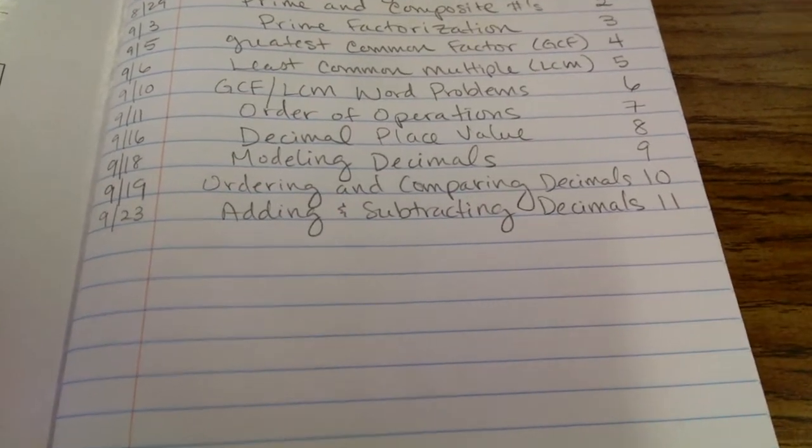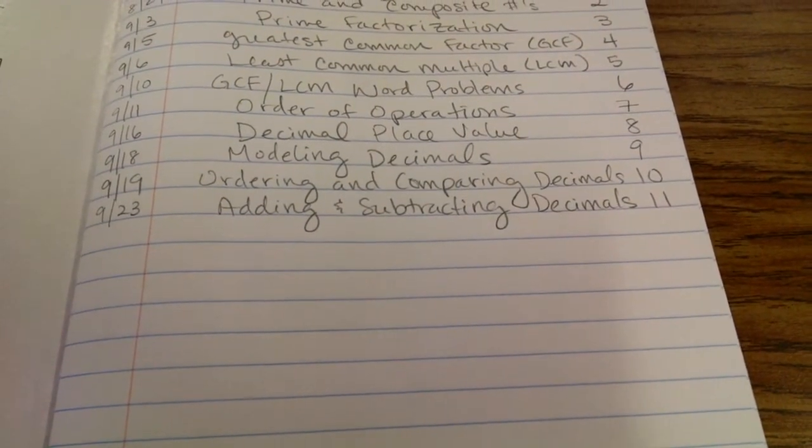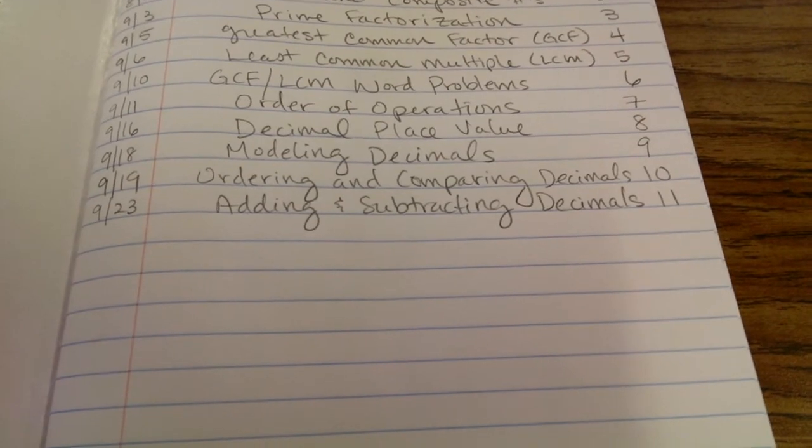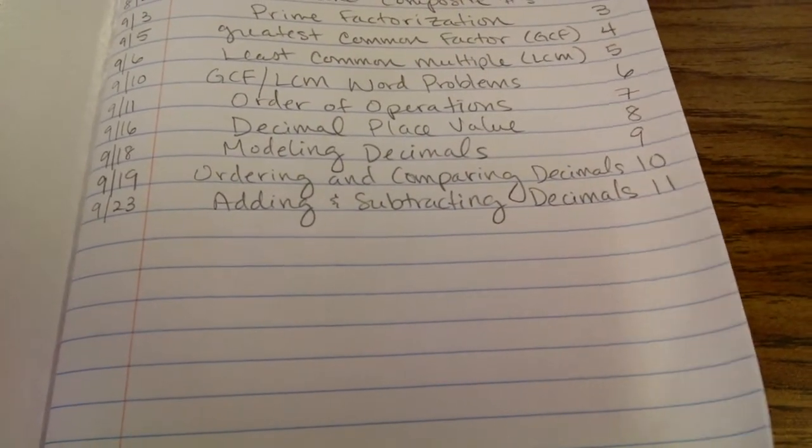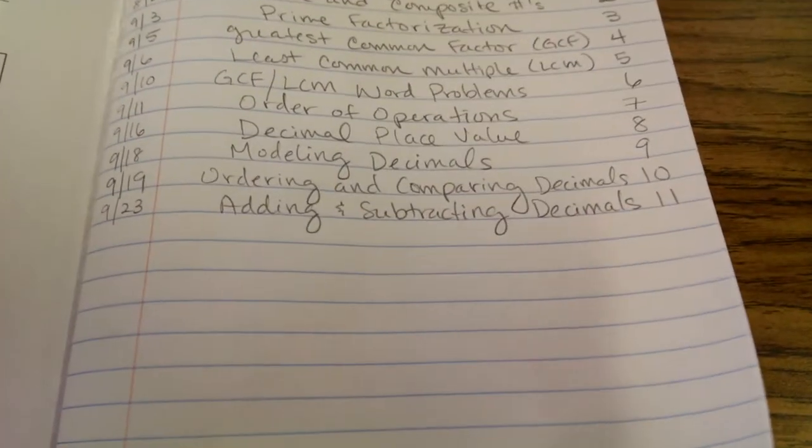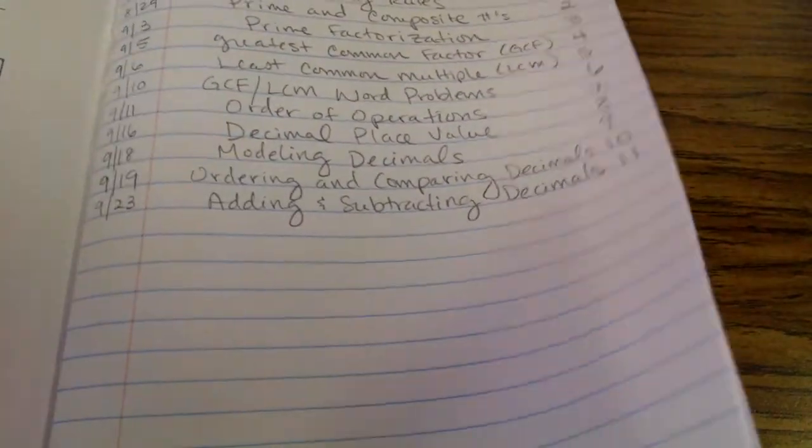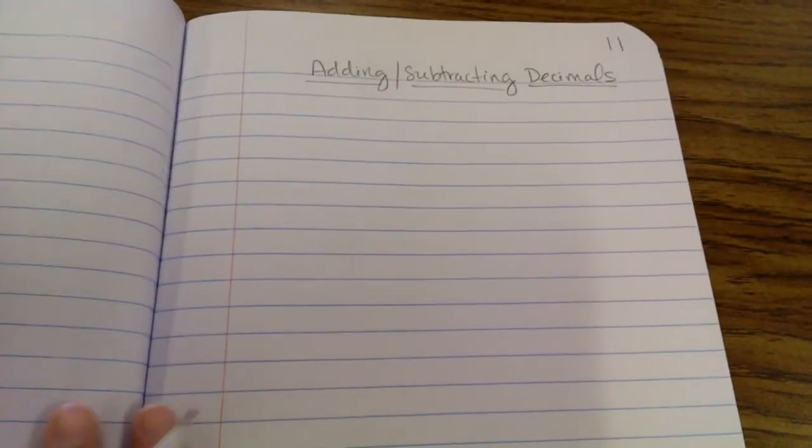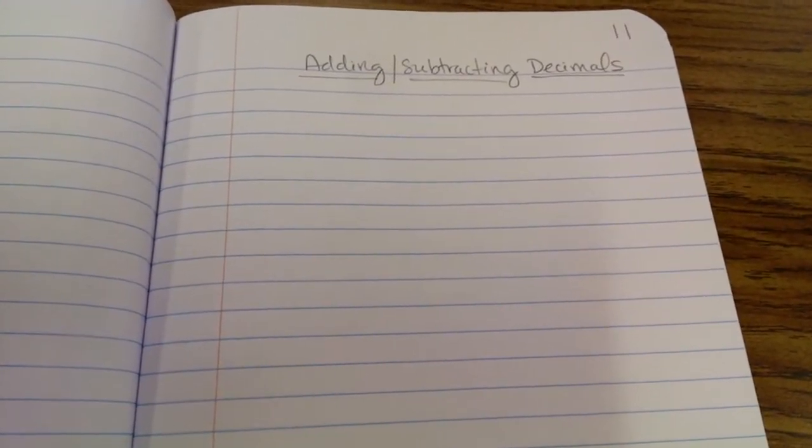Yours may be on page 10 or 12. Once you've done that, go ahead and turn to your next clean page. And at the top of your next clean page, go ahead and put adding and subtracting decimals.